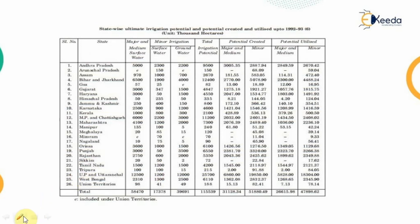In the Indian context, different classifications are carried out at the state level. Usually the major and medium categories are clubbed together, while minor irrigation is classified separately. Minor irrigation is further divided into surface water bodies and groundwater bodies. In the next video we will look at national water policies — when they came out and what their salient features are. Thank you.